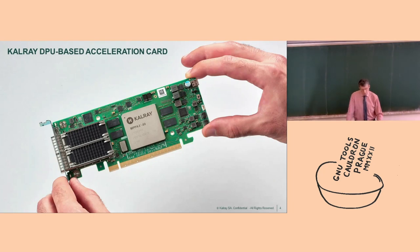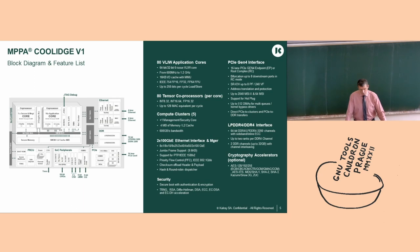The processor we manufacture — you can see it on those boards — goes into a server for IO acceleration, especially solid-state storage management. This processor is a complex system-on-chip. It contains 80 application cores, and each application core has a deep learning co-processor tightly coupled to it. GCC is also excellent at managing the resources of this deep learning co-processor.